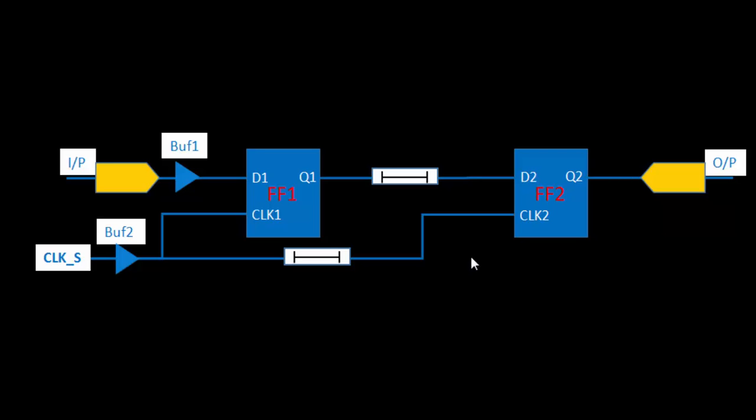And if it is not a half-cycle path or a multi-cycle path — which we can discuss next time — then you just remember that the data launched by FF1 is going to be captured by FF2 at the next clock edge. This is an unsaid rule. Everything in the design follows this. You can define a lot of constraints, but this is still an unsaid constraint. Now, coming back to skew.